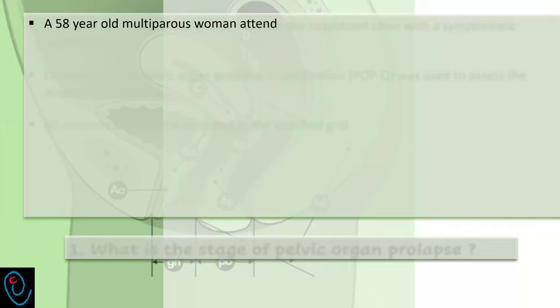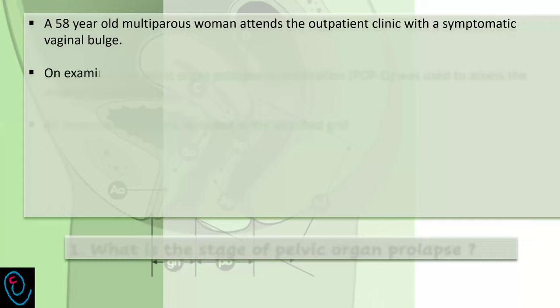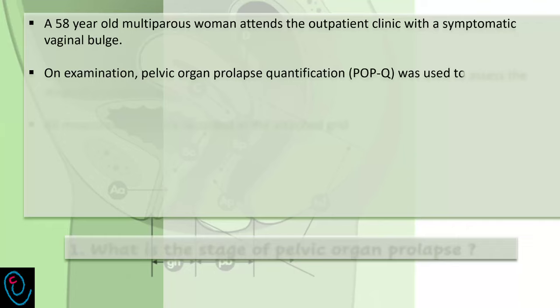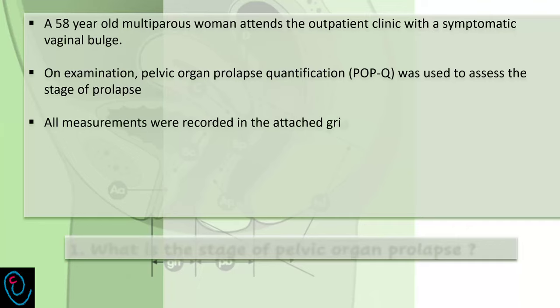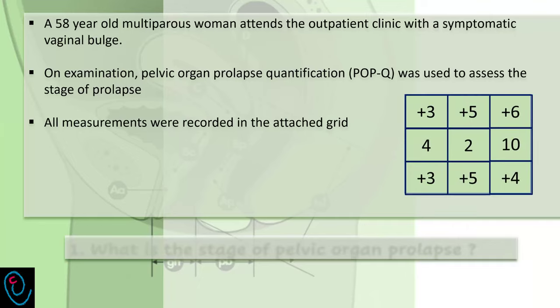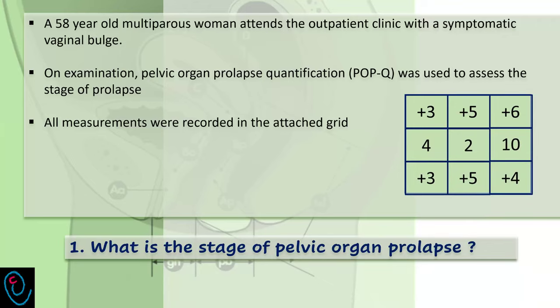A 58-year-old multiparous woman attends the outpatient clinic with an asymptomatic vaginal bulge. On examination, pelvic organ prolapse quantification was used to assess the stage of prolapse. All measurements were recorded on the attached grid. What is the stage of pelvic organ prolapse?